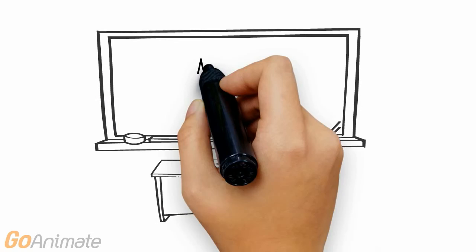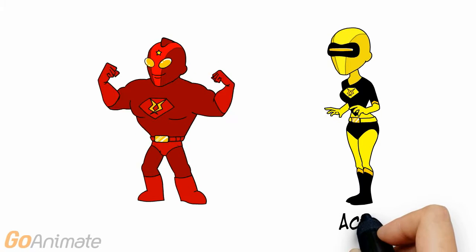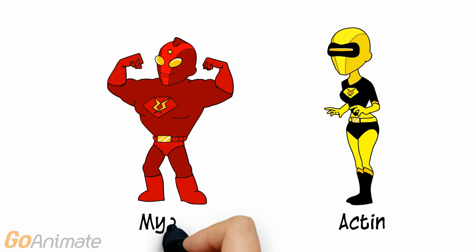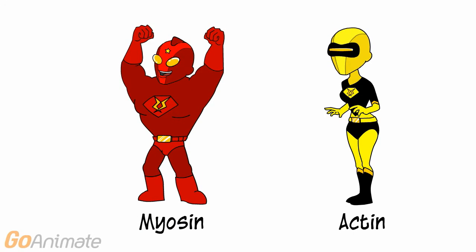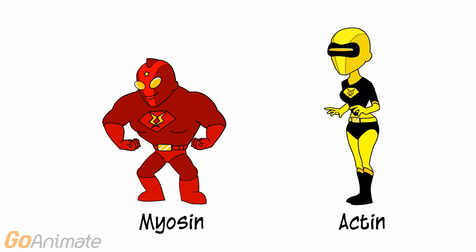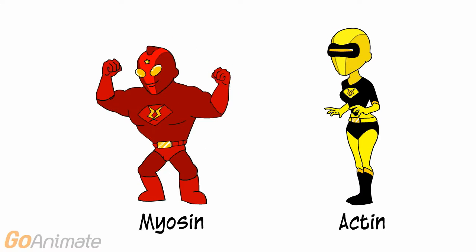Let's learn about muscle contraction physiology. Two important proteins in muscle are actin and myosin, and the goal is to get them together.